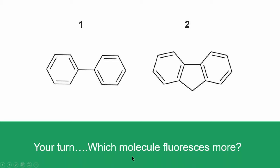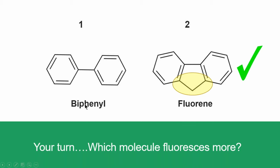Which molecule do you think fluoresces more? I hope you quickly caught on to this — this carbon bridge locks these two phenyl rings into place and allows this to have a better structure for fluorescence, promoting that rigidity and planarity. If you look at the names, it's kind of a giveaway: biphenyl versus fluorene.